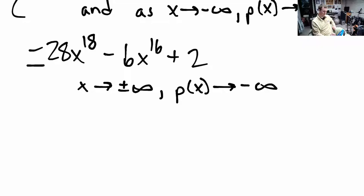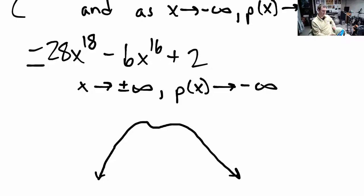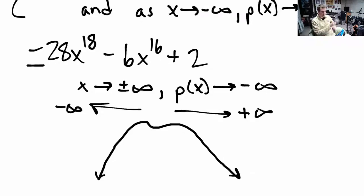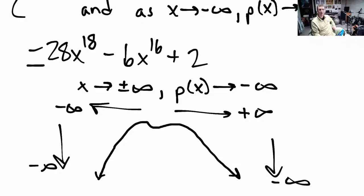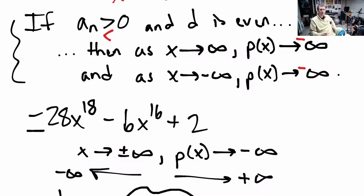The graph would look something like this: it comes up, maybe has a wiggle, but eventually comes back down. As we plug in more negative or more positive inputs, the further we go down to negative infinity on both sides. So this is the rule for even leading degree and negative leading coefficient for end behavior.